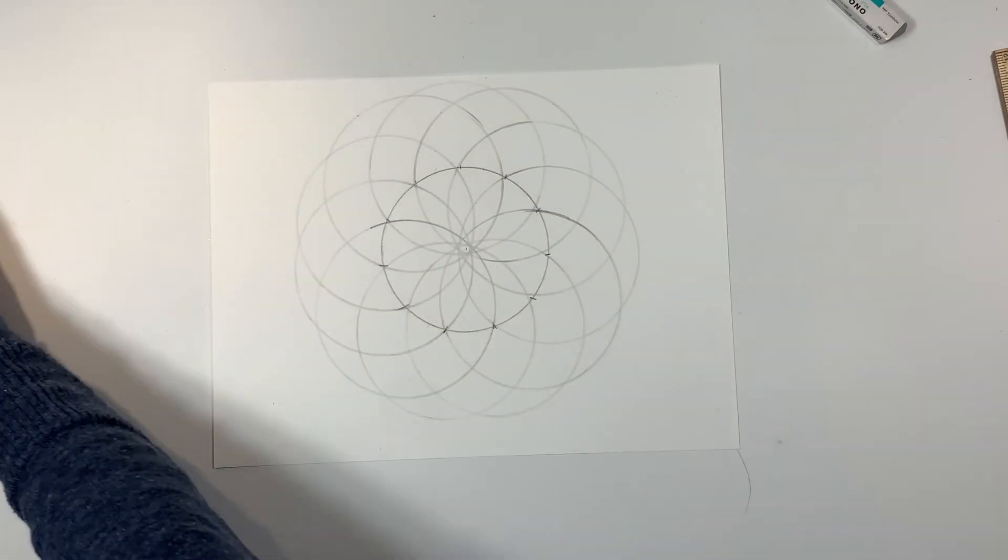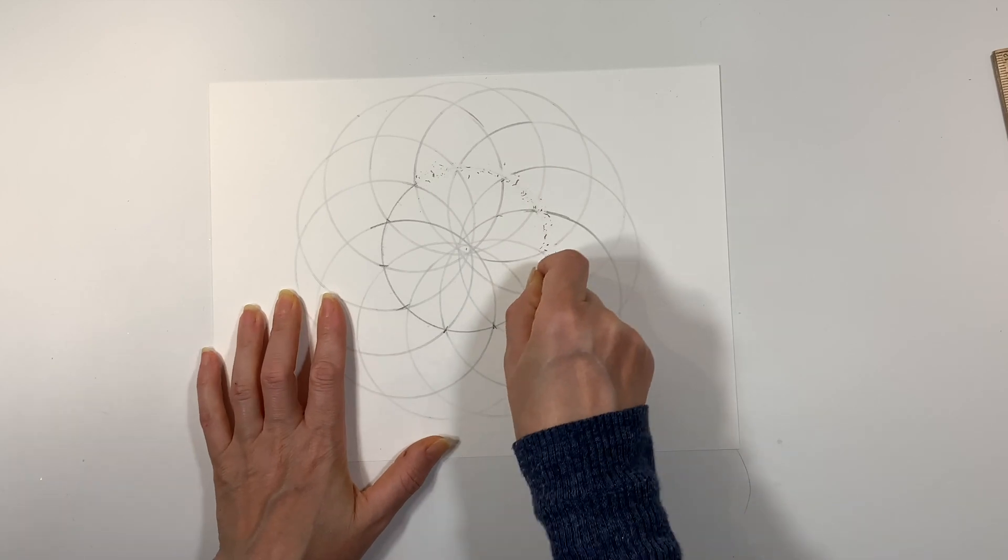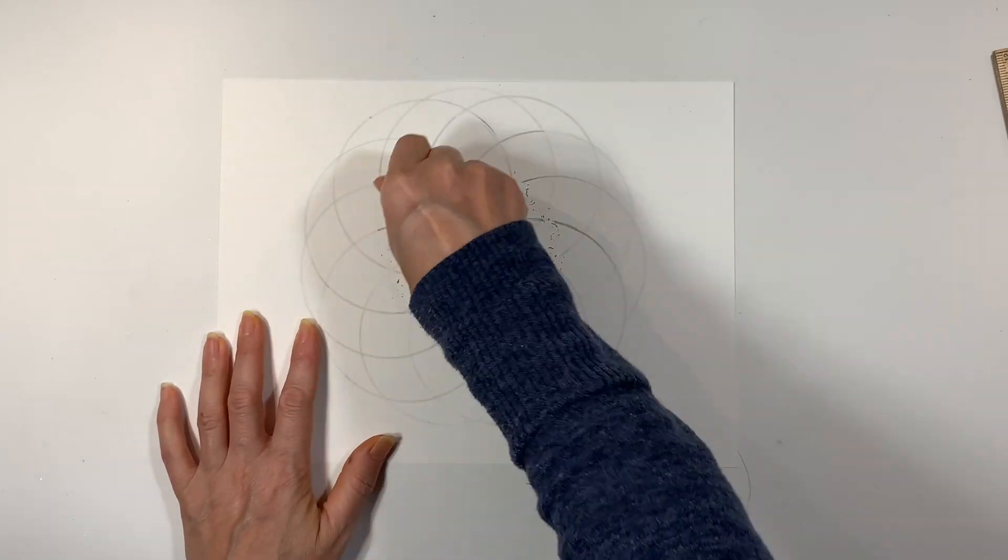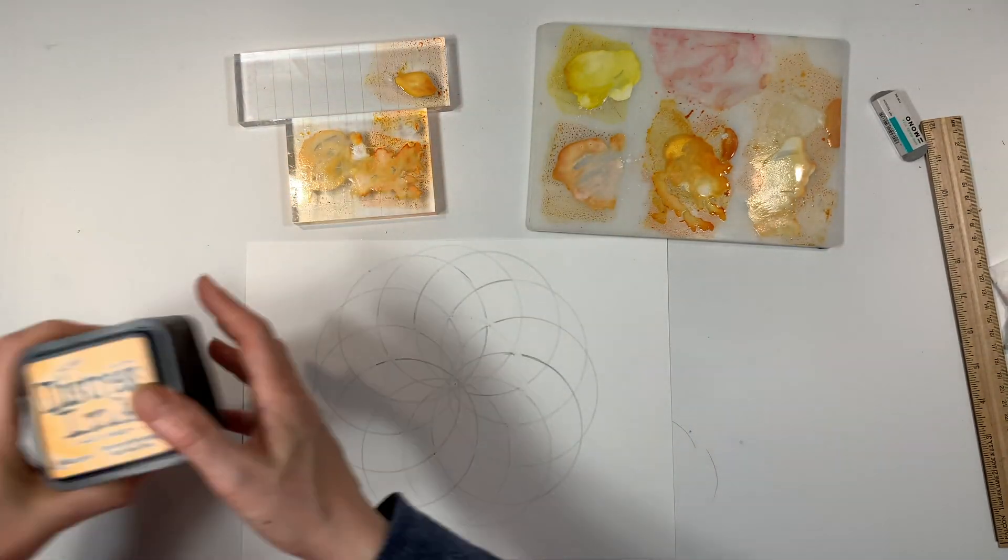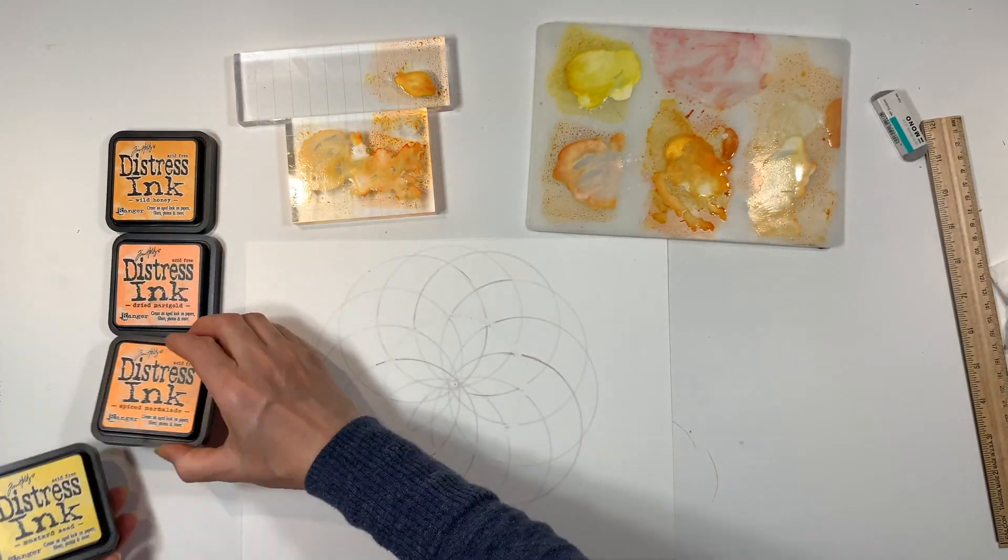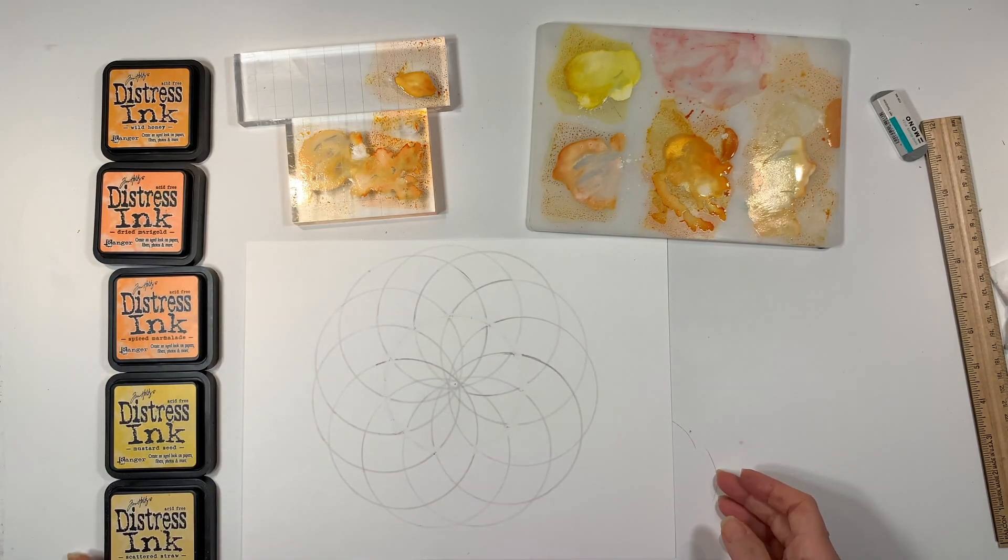Now once we're done with this we can stop right here and I'm going to erase that original circle. There is something else that you can do that's advised in the book, but I decided not to do that, and that's to do some additional arcs on the outline parts of this design, but I actually really like the way that this looked just as it was.